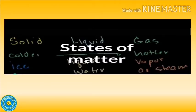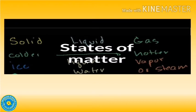Next, we will learn about the three states of matter. Based on the arrangement of molecules, matter exists in three states. They are solid state, liquid state, and gas state.